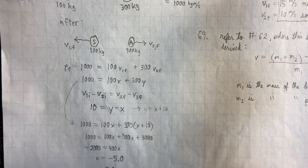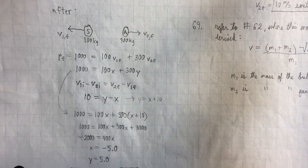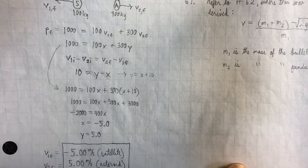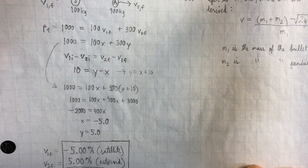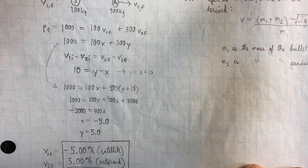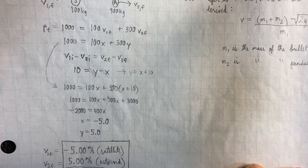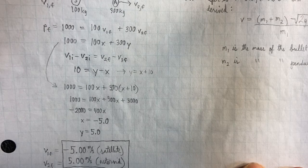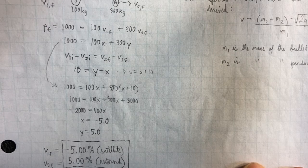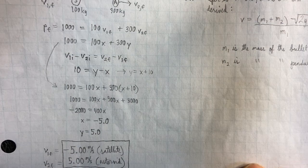Now, when we plug in our knowns and finish the solution, we end up with V1F being negative 5.00 meters per second. That's the satellite. And V2F is 5.00 meters per second, which is the asteroid.